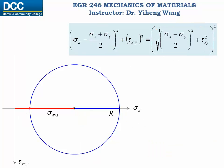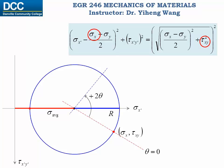When we do stress transformation, the original normal stress and shear stress are given, and they correspond to the coordinates of this point on Mohr's circle. Therefore this line represents the original orientation when theta equals to 0. If we want to find the new state of stress associated with the new orientation theta, then we rotate this line by angle 2-theta. According to sign convention, counterclockwise rotation corresponds to positive angle, and clockwise rotation corresponds to negative angle. Now this line intercepts with the circle at this point, and the coordinates of this point are the new stresses that we need to find.